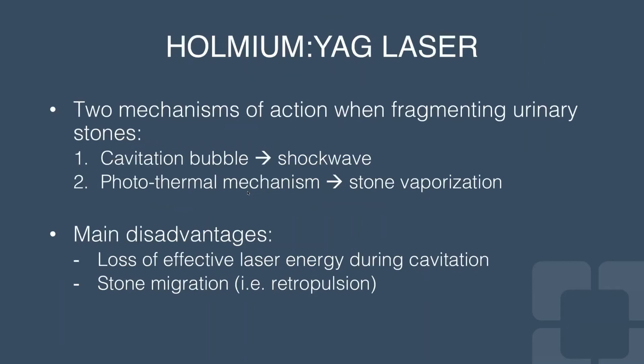How does the holmium YAG laser work? There are two different mechanisms of action when fragmenting urinary stones. The first is by way of a cavitation bubble, causing a shockwave — similar to our shockwave lithotripsy comminution mechanism. The second is a photothermal mechanism where the stone is vaporized. One main disadvantage is the loss of effective laser energy during the cavitation process, and stone migration or retropulsion is a well-known problem that minimizes the effectiveness of stone fragmentation.